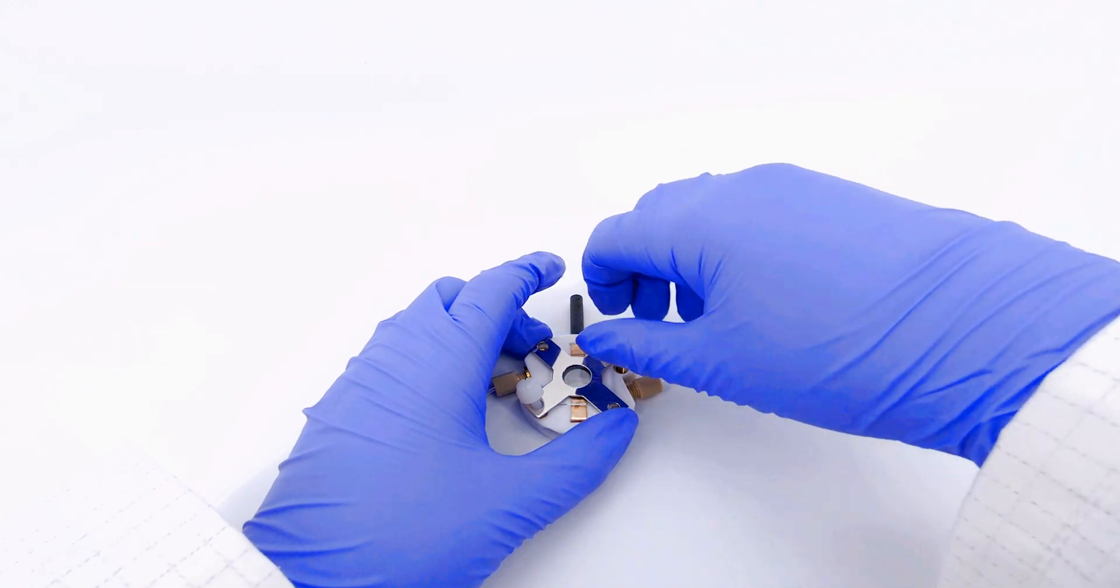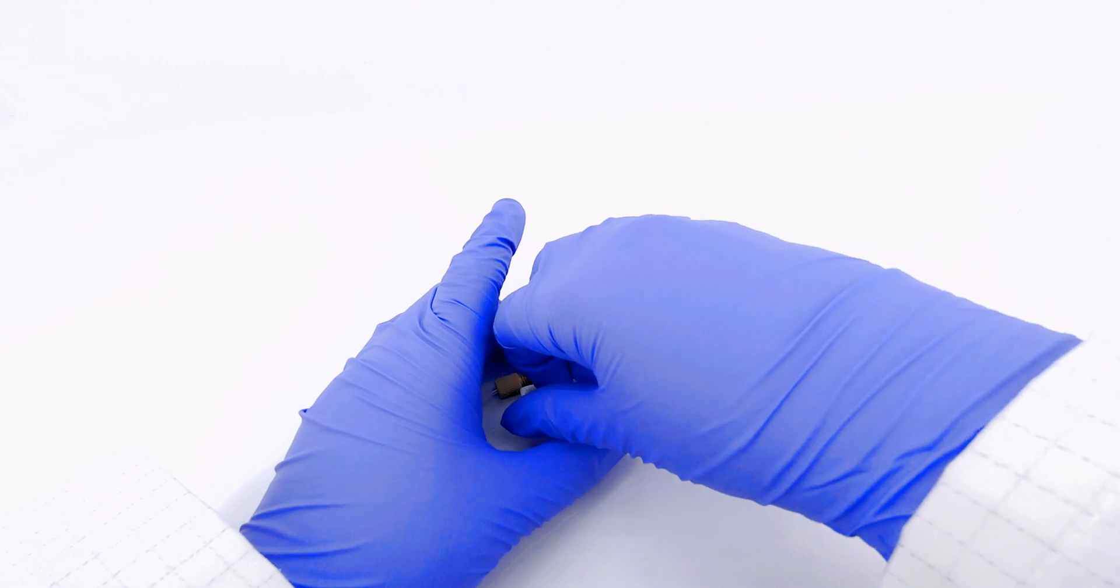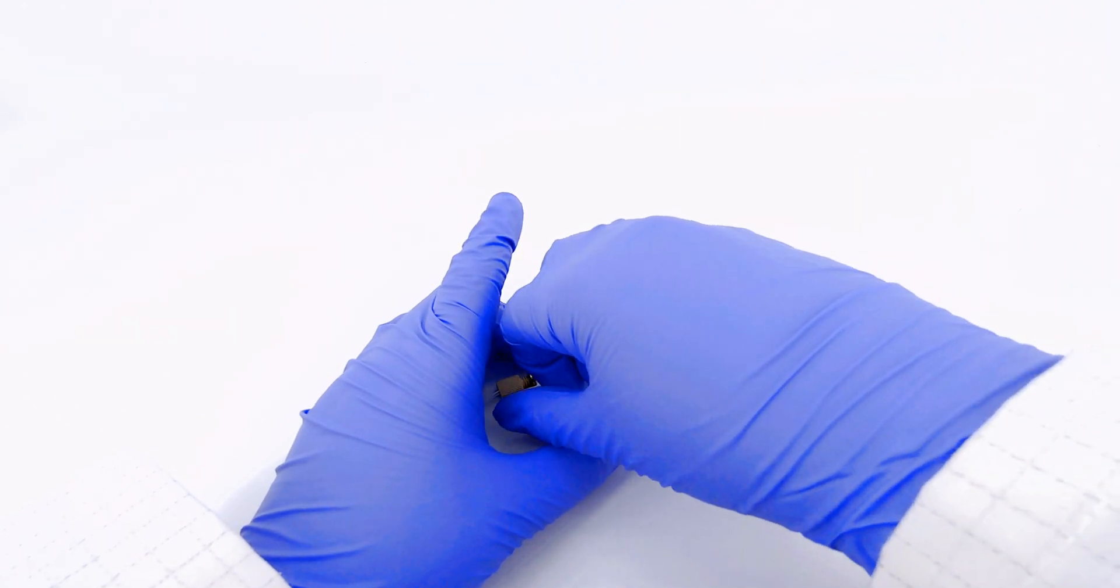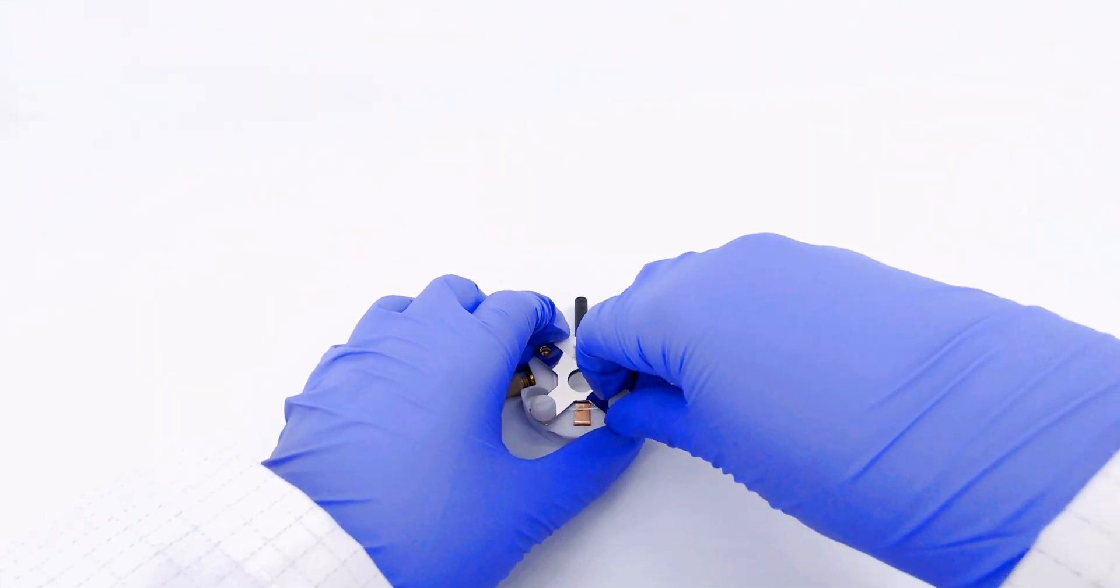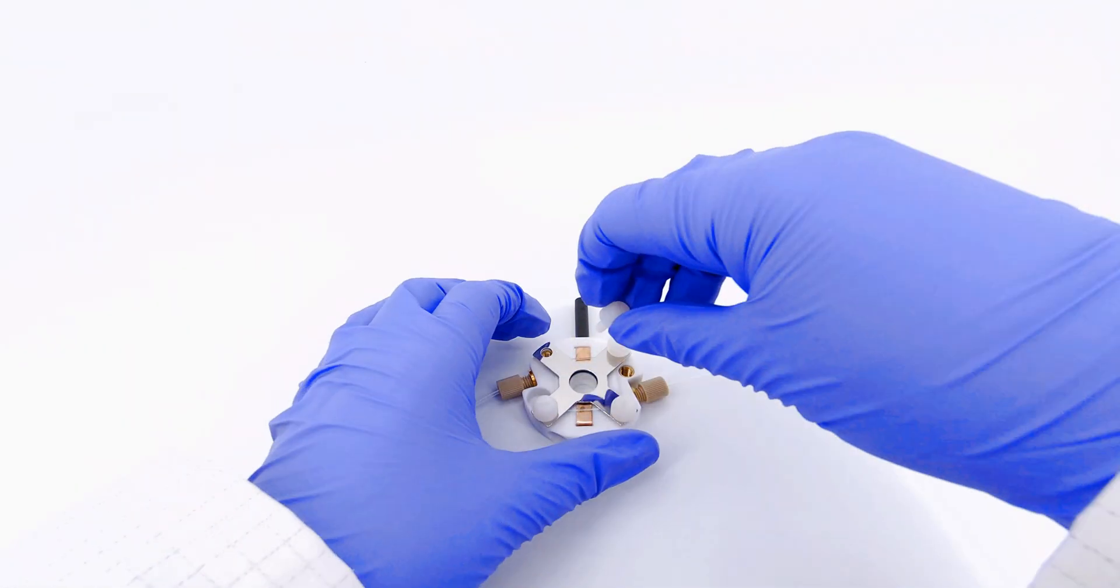Tighten the screws in a star pattern until the substrate is secure and the o-ring has formed a seal. Make sure not to over tighten the screws at this stage as this can result in stripping the brass insets.